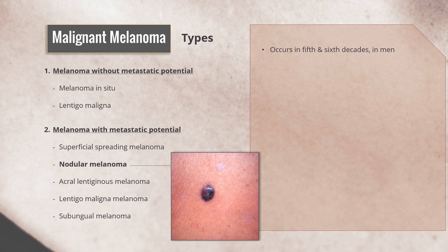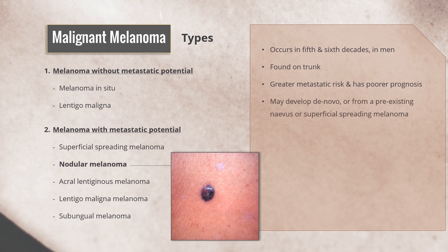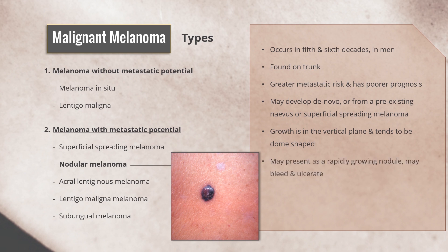Nodular melanoma is most common in the 5th and 6th decades, particularly in men, and is found on the trunk. It has greater metastatic potential and has the poorest prognosis among all types of melanoma. Lesions may develop de novo, from a pre-existing nevus, or from a superficial spreading melanoma. Its growth is in the vertical plane and tends to be dome-shaped. They may present as a rapidly growing nodule that may bleed and ulcerate. Nodular melanomas are heavily pigmented but are amelanotic in 5% of cases.